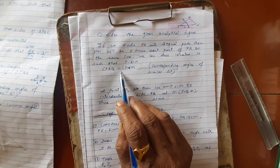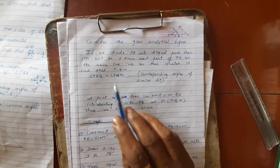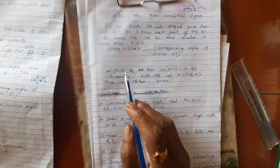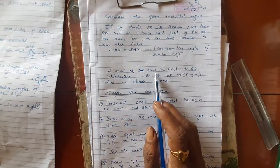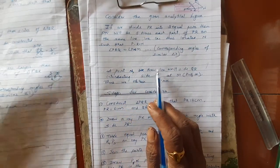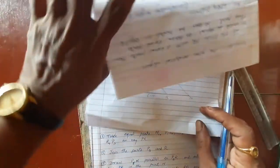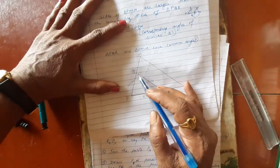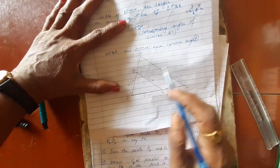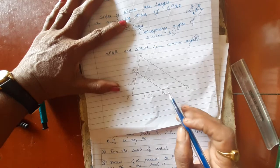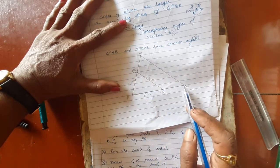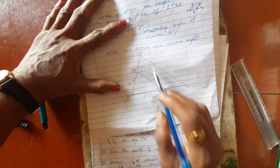Angle PRQ is equal to angle PNM — corresponding angles of similar triangles. At point N, we will draw line NM. What we are going to do in our construction: first we are going to draw PQR, then take this point and draw a line parallel to it, and we will get our triangle PMN.